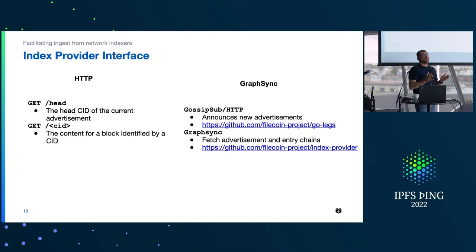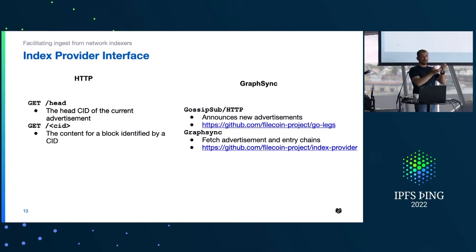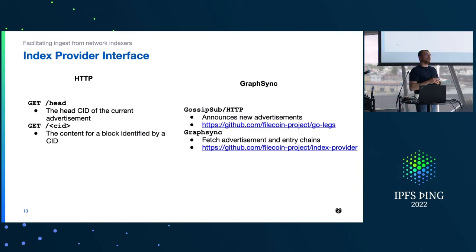How does a network indexer connect to the index provider to ingest information? There are two different interfaces. One is HTTP — extremely simple. The other is GraphSync. On the HTTP endpoint, you have an endpoint exposing the head advertisement and another endpoint that, given a CID, returns the associated block as JSON. On the GraphSync side, you can combine gossip sub or HTTP for publishing announcements with a GraphSync server that allows you to fetch blocks associated with CIDs. The links on the right are libraries implementing the GraphSync interface.